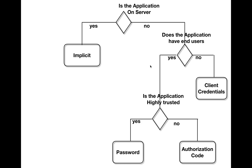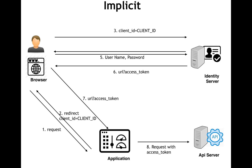So we saw three types of authentication so far: client credentials, password, and authorization code. To summarize: client credentials for background applications, password for server applications which are highly trusted, and authorization code for server applications where the user is not willing to give their password directly to the application. Now, if the application is running on the user's machine — on the edge — one popular authentication mechanism is implicit. Let's look at how implicit authentication works.